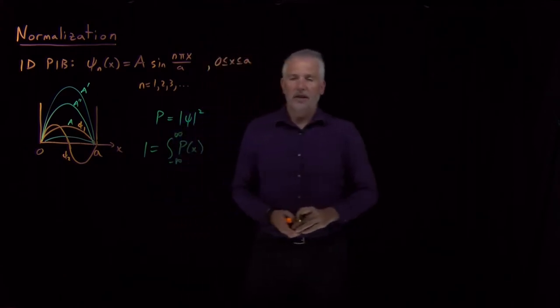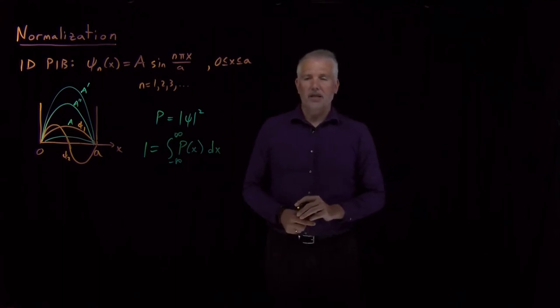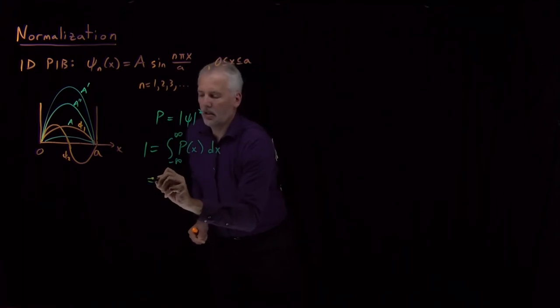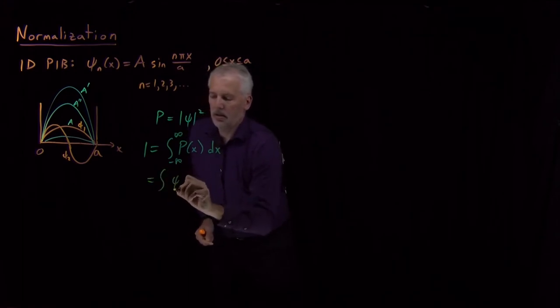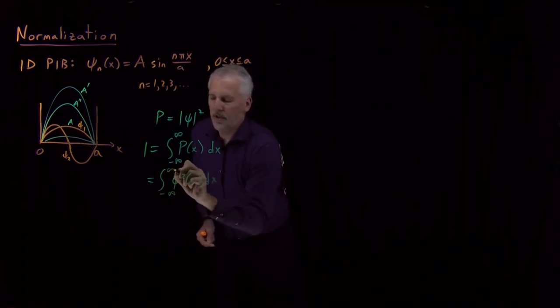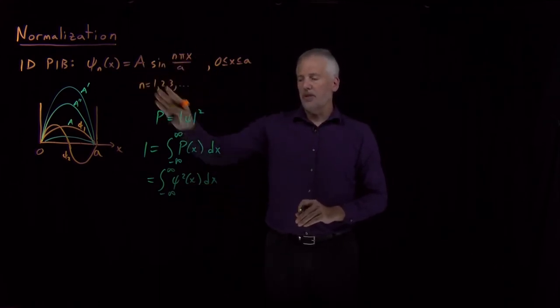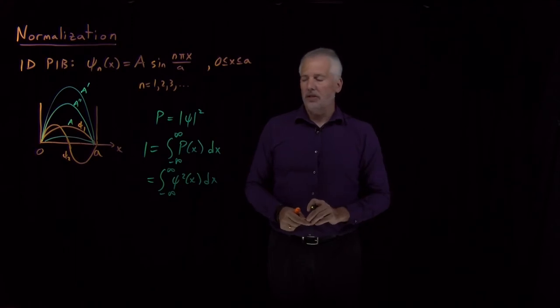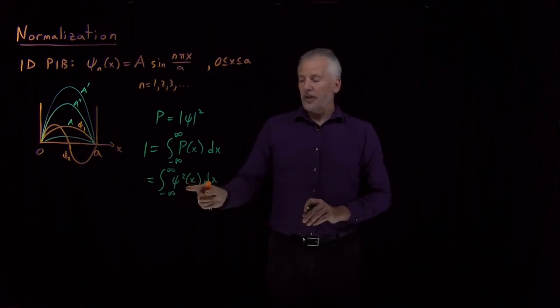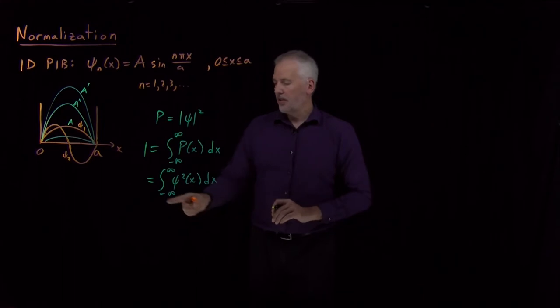Somewhere between negative infinity and infinity, if I add up all the probabilities of finding the particle at all of those places inside the box, I have to get 100%. Since probability is equal to the square of the wave function, and since I don't have any complex numbers anywhere, I don't have to worry about the complex conjugate. Squaring the wave function, if I integrate that everywhere, I have to get one. So that's going to end up being how we determine the value of A.